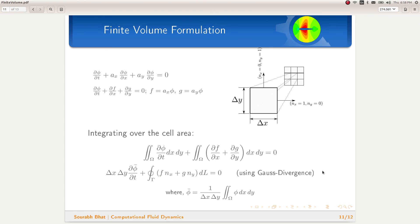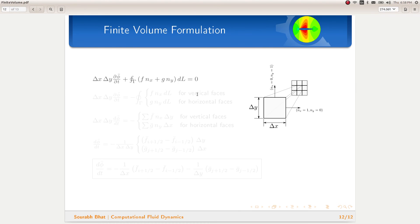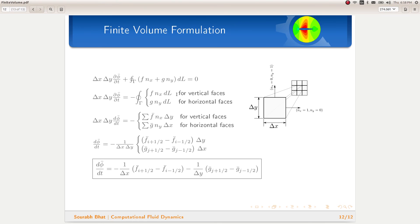Well, it turns out that for a Cartesian mesh, it easily simplifies further to a single term inside the line integral. As you can see, for a Cartesian mesh, the vertical faces have ny equal to zero. Therefore, the term g times ny goes away. And for horizontal two faces, nx is equal to zero. Therefore, f nx becomes zero. And therefore, we get single terms inside the integral.